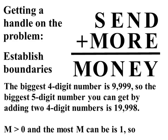Now, we know our number has to be smaller than that. And we know that M has to be greater than zero. And we just saw that M has to be, at most, one. So, M equals one.